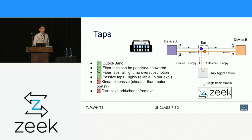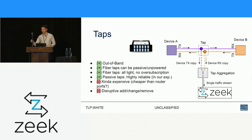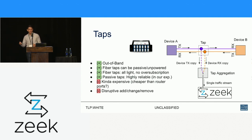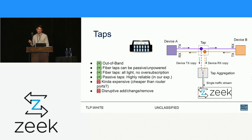That's where a tap comes in. A tap is a separate piece of physical equipment that you install inline on a link between two devices, rather than running on one of the devices. There are all kinds of taps: active taps, passive taps, copper taps for Cat5e or Cat6a, and fiber taps. We're big fans of fiber taps, especially passive fiber taps, because they've been very reliable for us.